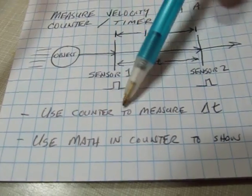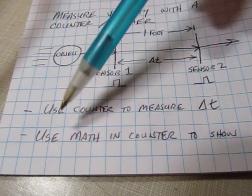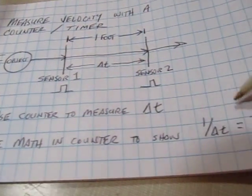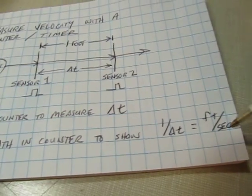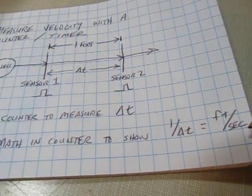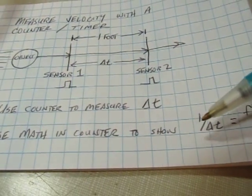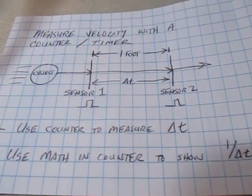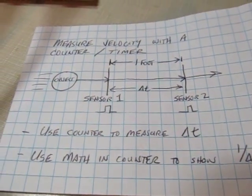We can use a counter to measure that time interval. This counter also has math capability that allows you to invert that to 1 over Delta T, which will directly read out in feet per second. If you have a counter that doesn't do the 1-over math, you just do that calculation yourself.